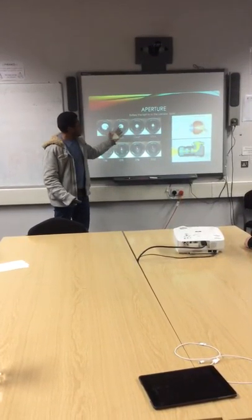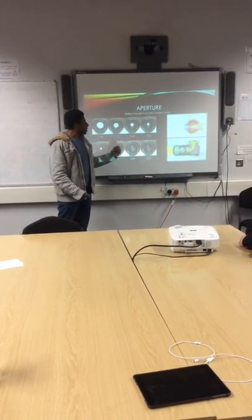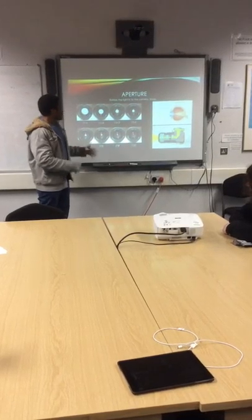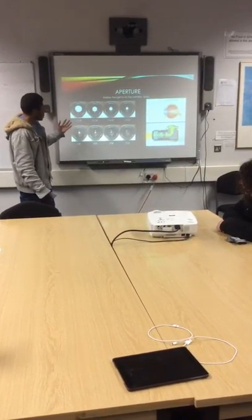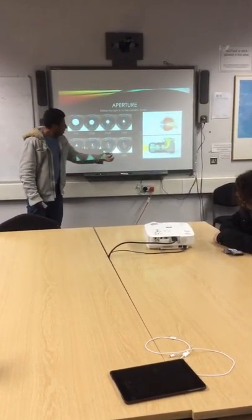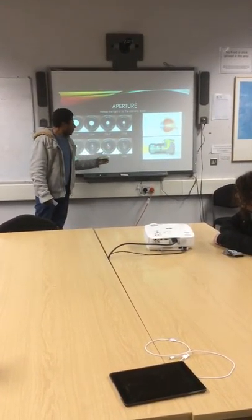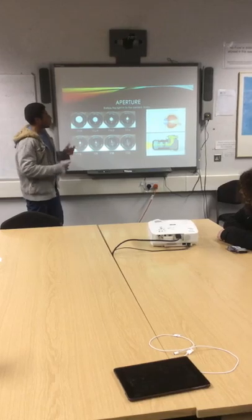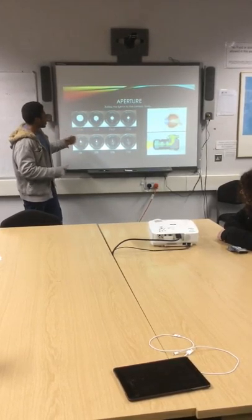Aperture — think about it like the lens of your eye. It opens and closes as the sun brightens. So the brighter the image, the smaller the aperture, so it can gather in a nice amount of light.